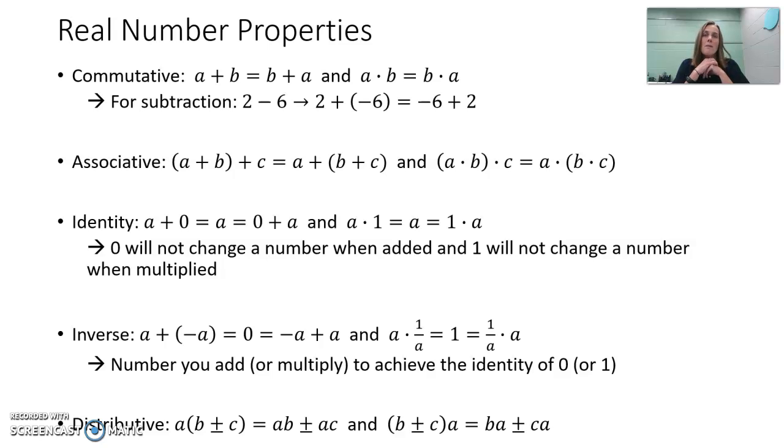So these are not rules that you have to memorize as far as the name. I do not care necessarily that you remember that that's called the commutative property right now. We're not going to have proofs. We're not going to have a vocabulary on this test where you have to name all of those. I just want to make sure that you remember all of those properties because we're going to use them.